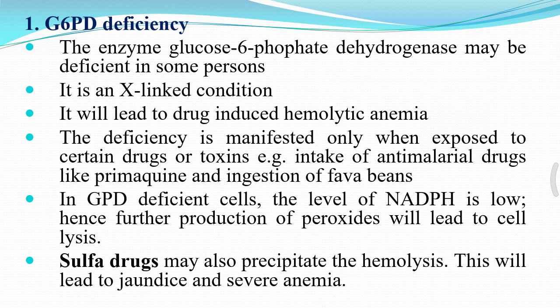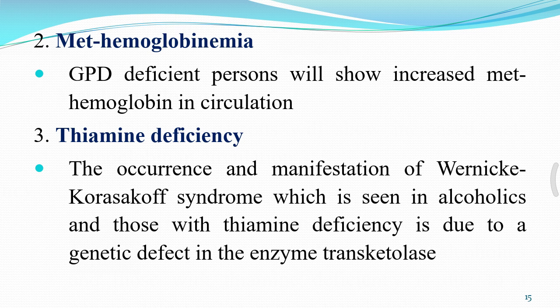In G6PD-deficient cells, NADPH is low, and further production of peroxides leads to cell lysis, resulting in jaundice and severe anemia. G6PD-deficient persons also show increased methemoglobin in circulation, causing methemoglobinemia. Thiamine deficiency leads to the occurrence of Wernicke-Korsakoff syndrome, seen in alcoholics and those with thiamine deficiency, due to deficient transketolase enzyme activity.